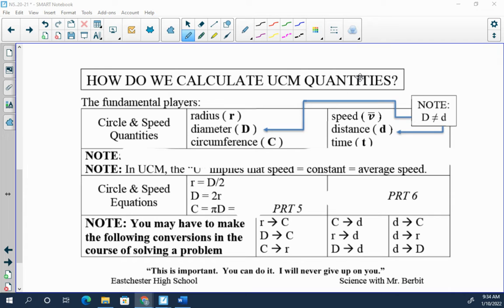We have three physical quantities that we typically discuss when describing a circle: radius, which is minuscule r; diameter, which is capital D; circumference, which is capital C.